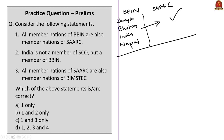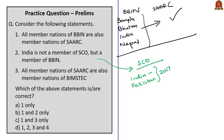The second statement: India is not a member of SCO (Shanghai Cooperation Organization) but is a member of BBIN. India IS a member of the Shanghai Cooperation Organization — in fact both India and Pakistan became members of SCO in the year 2017. So the first part of the second statement is wrong, making the entire statement wrong.